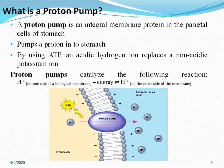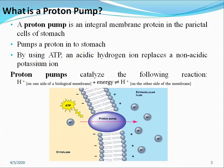First, what is meant by proton pump? The proton pump is an integral membrane protein in the parietal cell of the stomach that pumps a proton into the stomach by using ATP. The acidic hydrogen ion replaces a non-acidic potassium ion. This proton pump catalyses the following reaction.